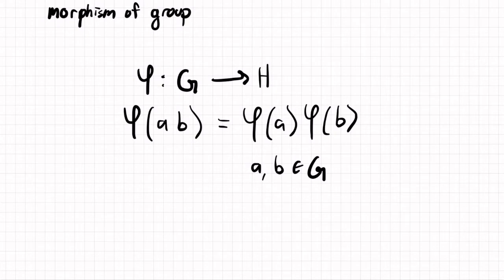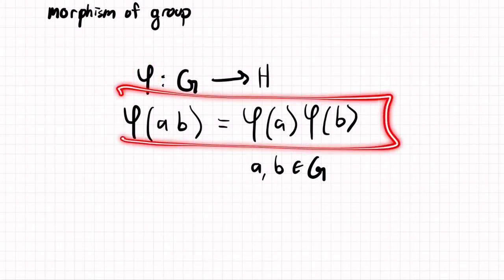And that is the condition that makes a map, which map slash function is phi in this case, this makes it a homomorphism.